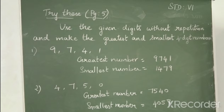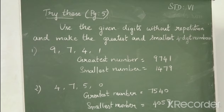Now look at the next sum: 4, 7, 5 and 0. We have to form the greatest and smallest 4-digit number. The greatest among the 4 is 7, the next greatest is 5, then 4 and 0. So the greatest number formed is 7,540. For the smallest, we can't use 0 first because a number will not start with 0, so 0 should be used second. The smallest number formed here is 4,057.